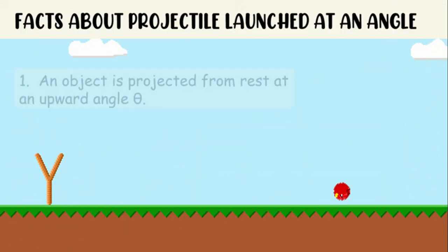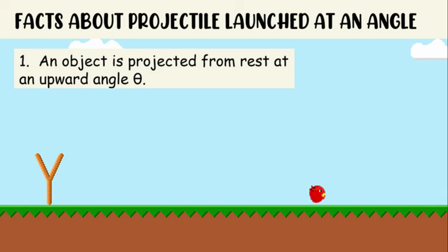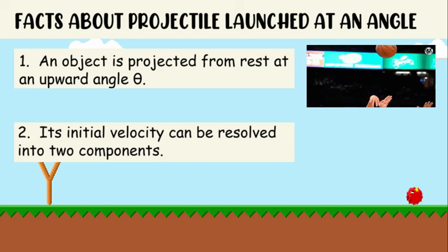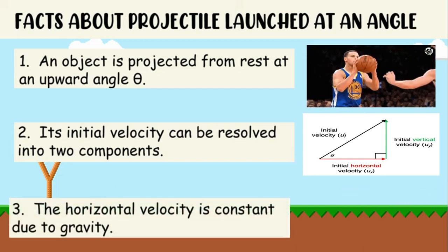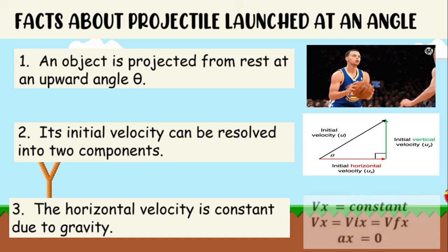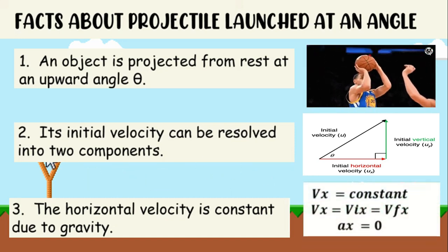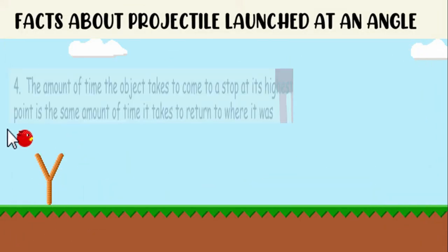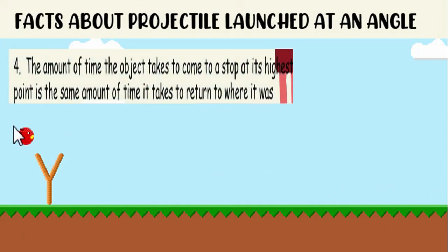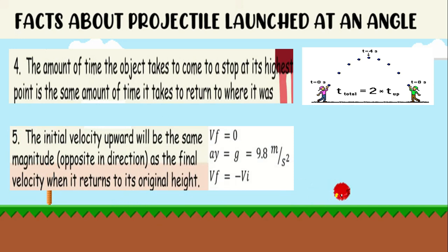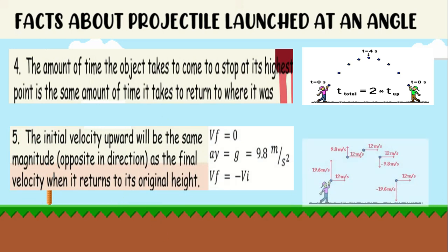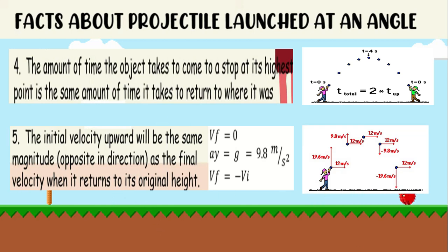Facts about a projectile launched at an angle. First, an object is projected from rest at an upward angle. Second, its initial velocity can be resolved into components: the x-component and the y-component. Third, the horizontal velocity is constant due to gravity, that's why a sub x equals 0. Fourth, the amount of time the object takes to reach its highest point is the same amount of time it takes to return to where it was. And lastly, the initial velocity upward will be the same magnitude but opposite in direction as the final velocity when it returns to its original height.